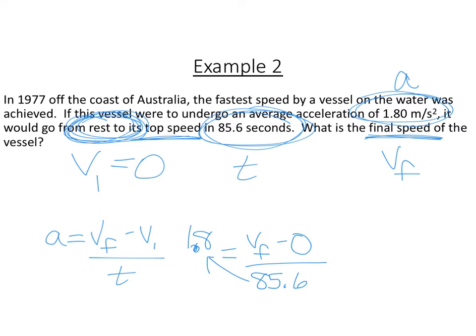We want to solve for V final. First thing we're going to do is get this off the bottom. That is going to give us 154.08, and then that would be set equal to V final minus V initial. You see that the V initial being 0, this would just kind of go away. So this is V final right here. That's our V final.